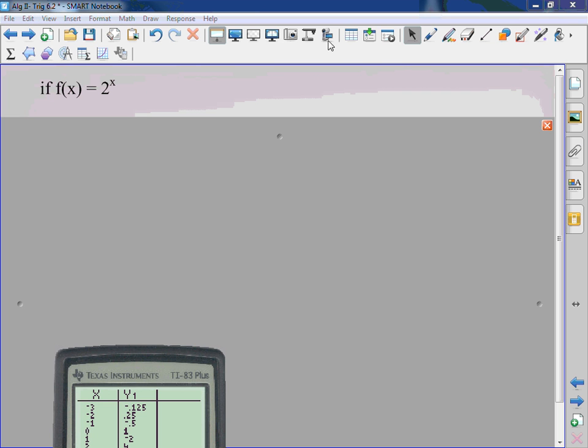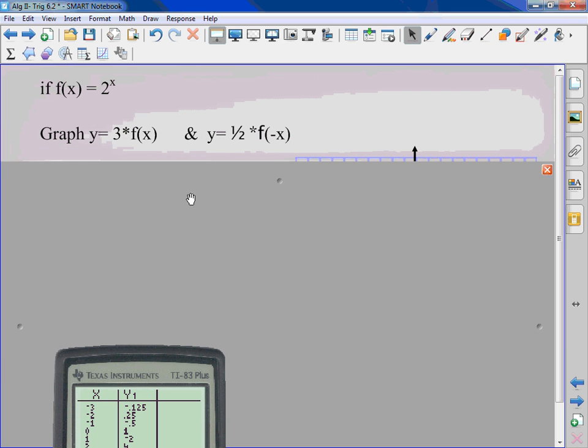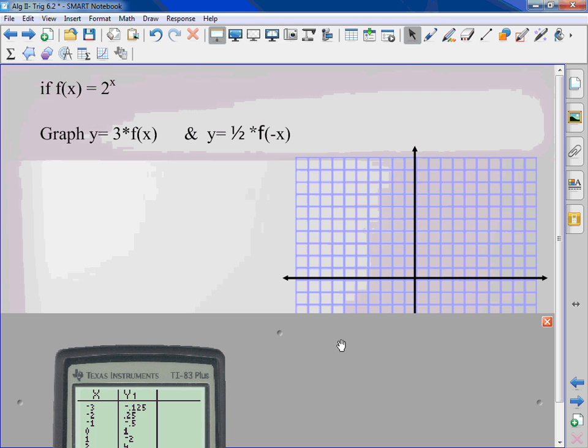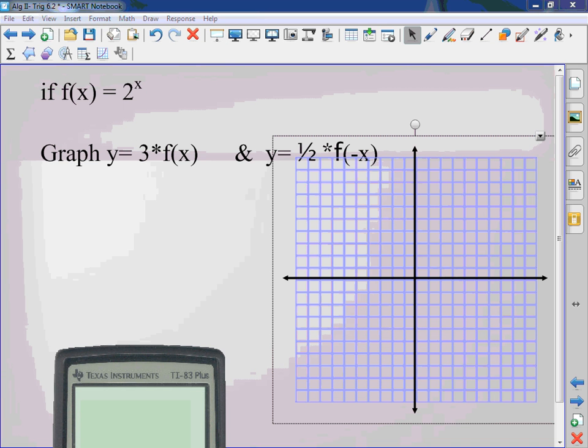If f of x equals 2 to the x, we're going to graph 3 times that and 1 half times the negative of that. Yeah, we just did the top one. The top one is our first graph. I want you to look at what happens if I multiply it by 3 or I cut it in half and change the sign.